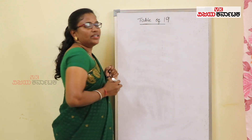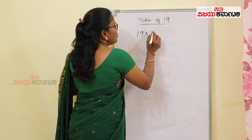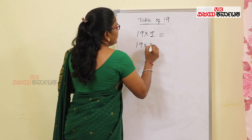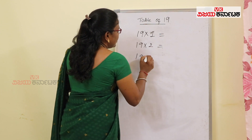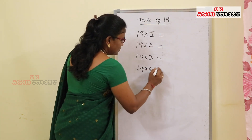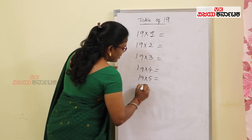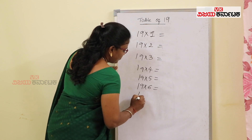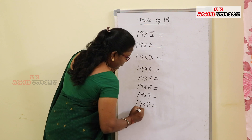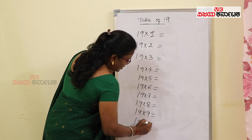Table of 19. So we have 19×1, 19×2, 19×4, 19×5, 19×6, 19×7, 19×8, 19×9, 19×10.